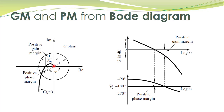To read phase margin from the Bode diagram, we locate the point with magnitude equal to 1, which corresponds to 0 dB. The phase angle at this 0 dB point is less than minus 180 degrees in magnitude, and the difference between this angle and minus 180 degrees is the phase margin.